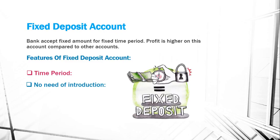Third is loan facility — the bank can provide a loan facility on this account, which may be 60% to 80% of the fixed deposit. Fourth is rate of interest — the bank offers different rates of interest on the basis of time period.